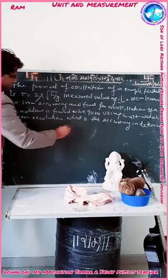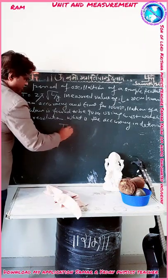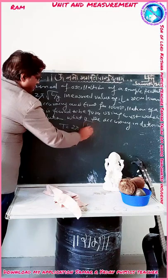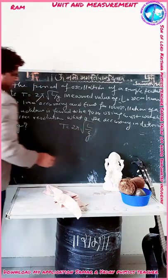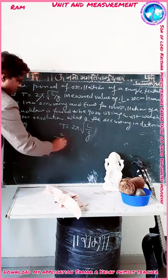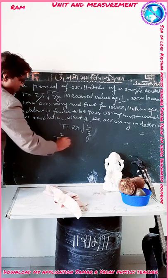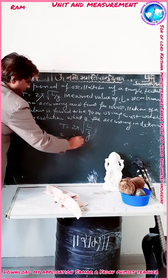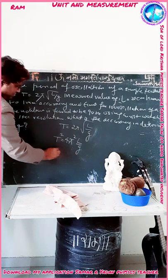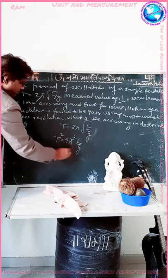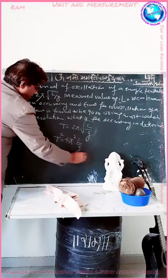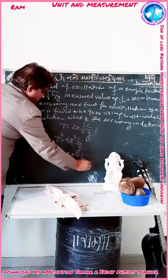We know that T is equal to 2π under root L upon G. Squaring both sides, we get T squared is equal to 4π squared L upon G. Making the formula, small g is equal to 4π squared L upon T squared.